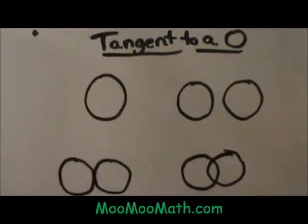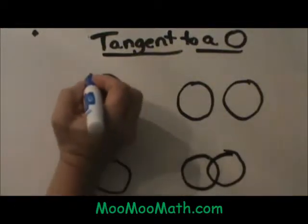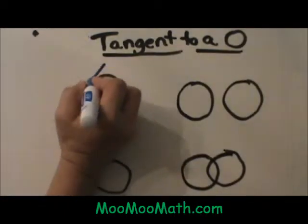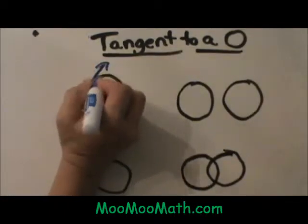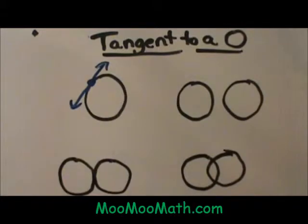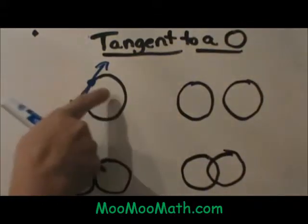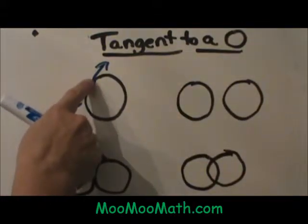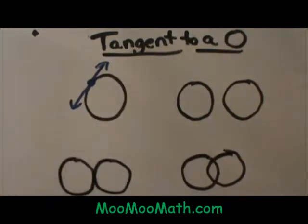Let's start with our first diagram. What is a tangent to a circle? A tangent to a circle is a line that touches a circle in one place. The only way to touch a circle in one place is to be on the exterior of the circle. This is called a point of tangency and this line is called tangent to the circle.